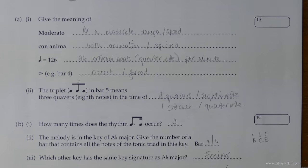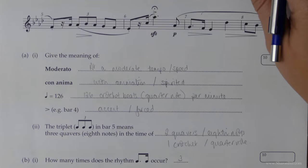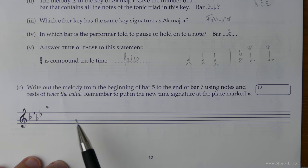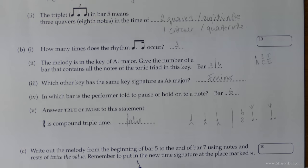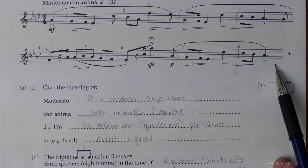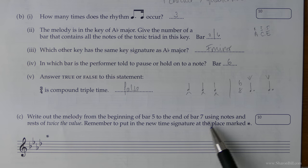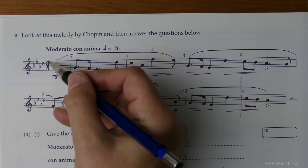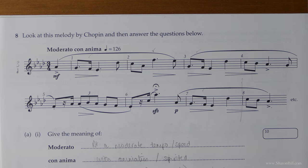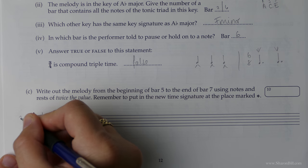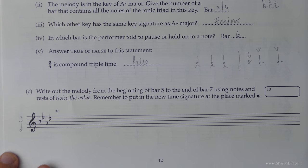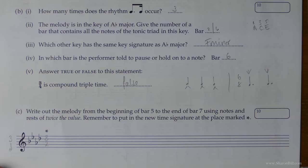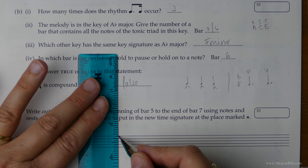Now the last question: we're going to write out the melody from the beginning of bar five to the end of bar seven, using notes and rests of twice the value, and we need to change the time signature accordingly. At the moment we're counting in three crotchet beats — three quarter notes. Our new time signature will still have three beats per bar, but doubled, so we'll be thinking in minims or half notes. Our new time signature will be three over two.